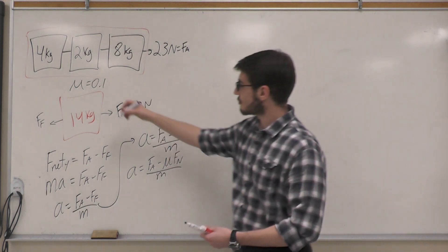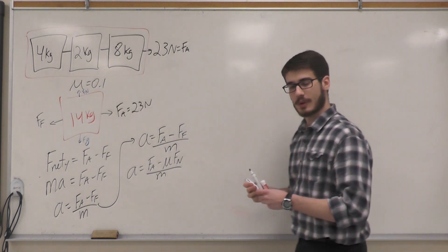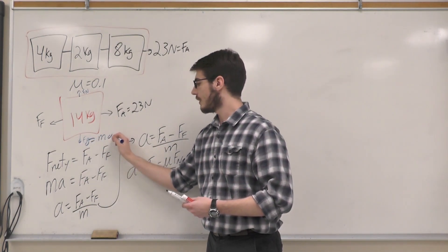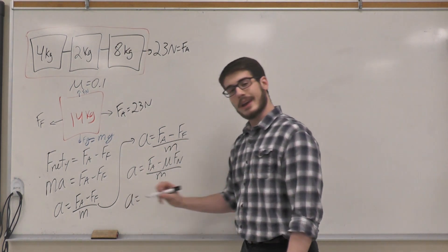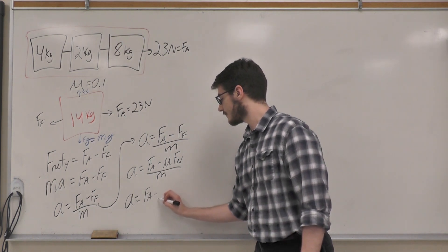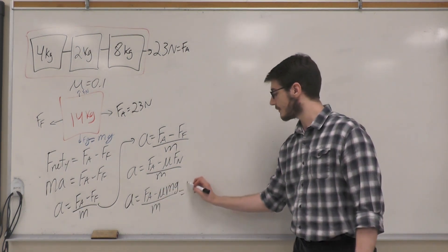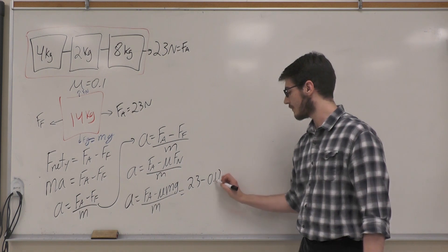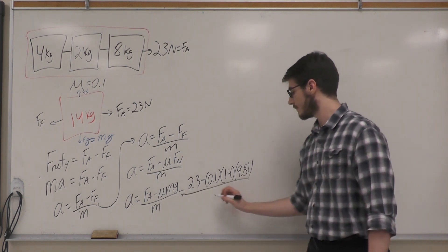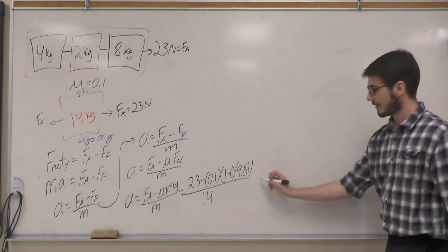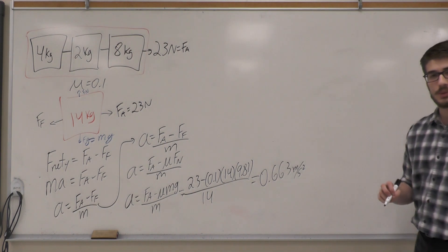I have all the variables needed to solve for a now. I can rewrite friction with the formula that friction is equal to mu times force normal. In this question, I know that the force normal is equal and opposite to gravity. Gravity is m times the gravitational acceleration, so a in this case will be...